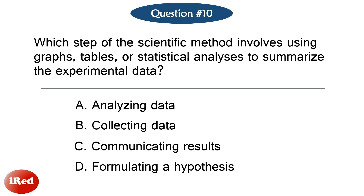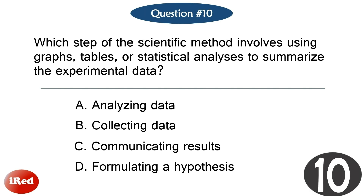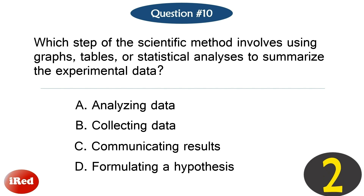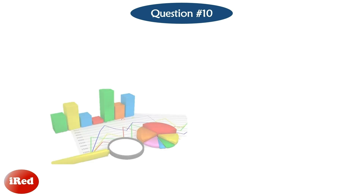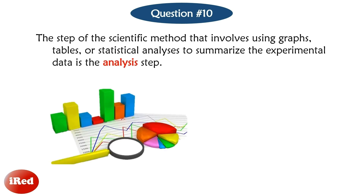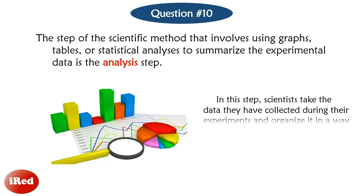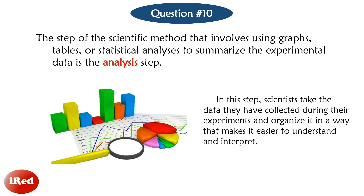Question number 10: Which step of the scientific method involves using graphs, tables, or statistical analyses to summarize the experimental data? This is the analysis step. In this step, scientists take the data they have collected during their experiments and organize it in a way that makes it easier to understand and interpret.